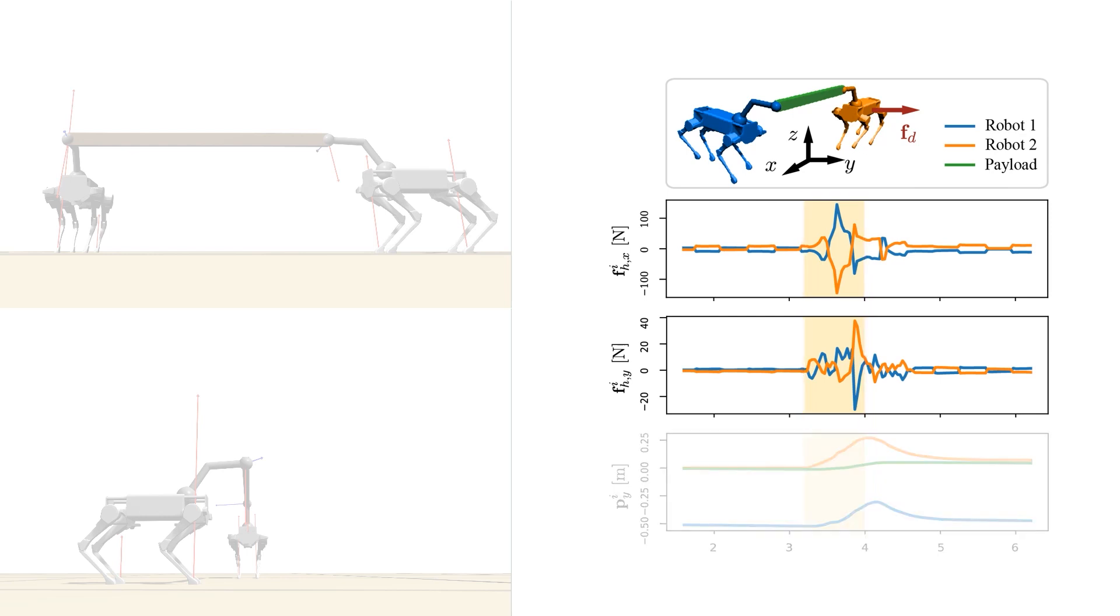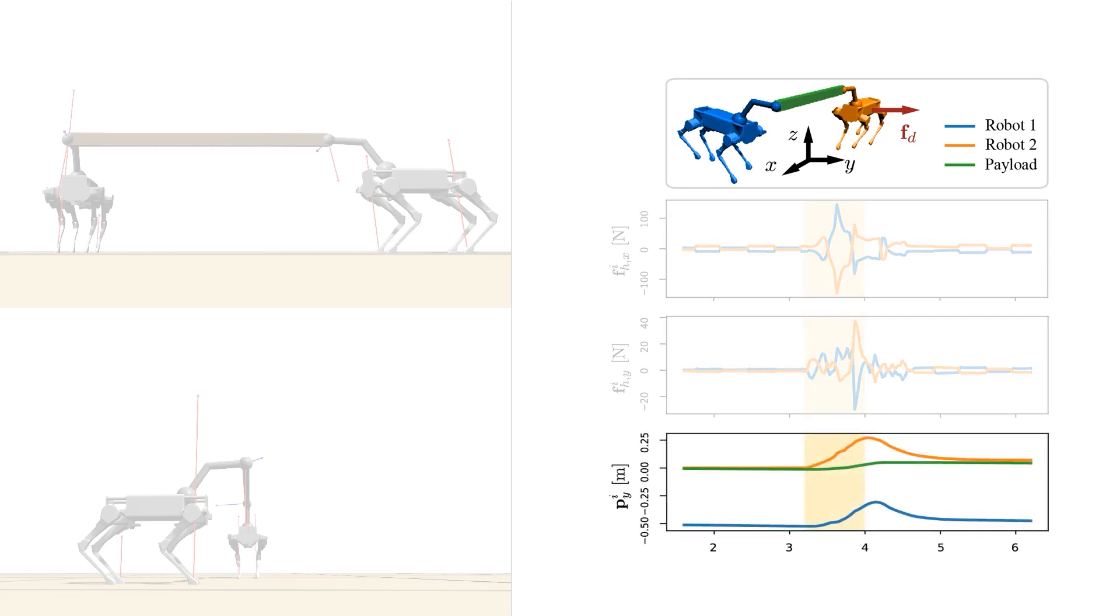The top two plots show the horizontal components of the robots' manipulation forces. After the disturbance, the robots start pulling and pushing on the object to retain their balance. In the bottom plot we can see the position coordinates along the disturbance force direction. While the green trajectory of the object closely tracks its zero reference, the robots sidestep to cope with the perturbation, as shown again in the video on the left.